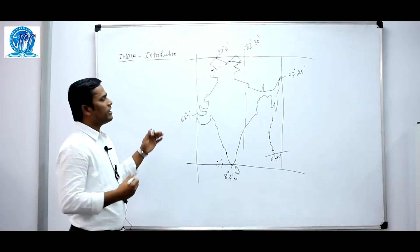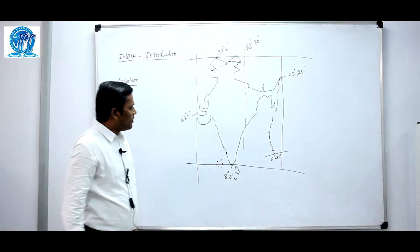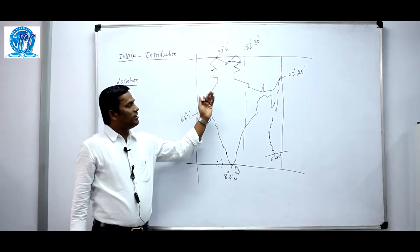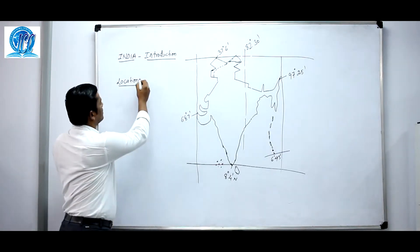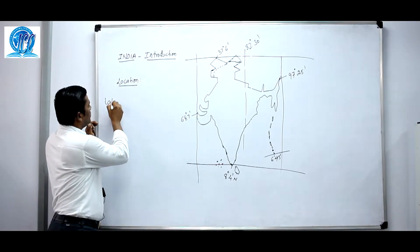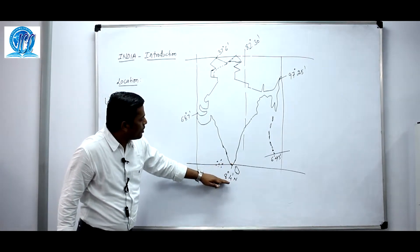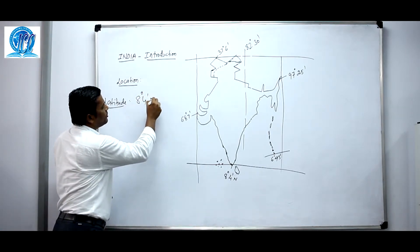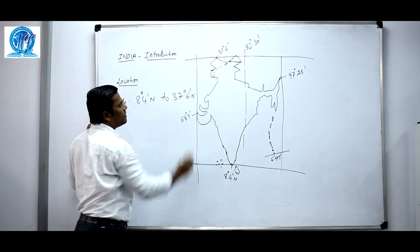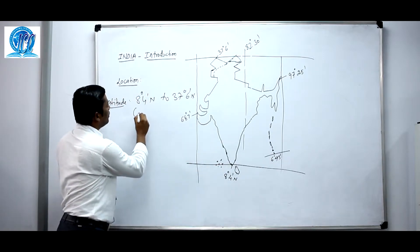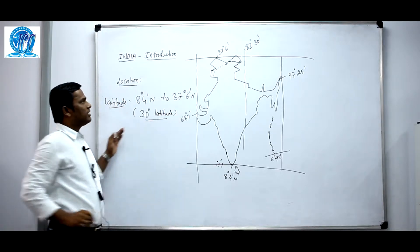First we're going to study about the location of our country — latitude and longitude. Our country comes in the northern hemisphere and the eastern part of the northern hemisphere. The latitudinal extent of the country is from 8 degrees 4 minutes north latitude to 37 degrees 6 minutes north, which is nearly equivalent to about 30 degrees of latitude.